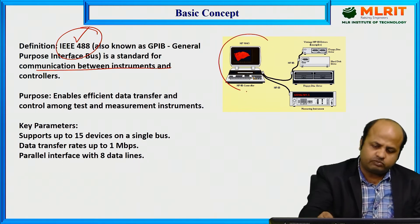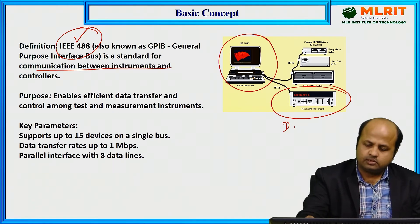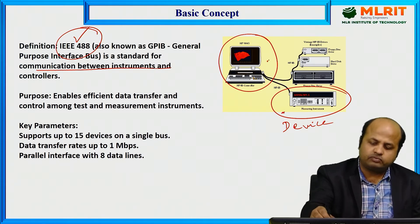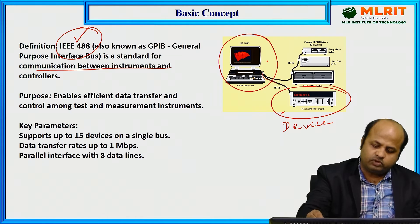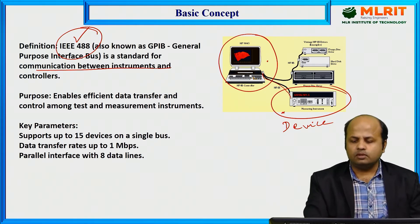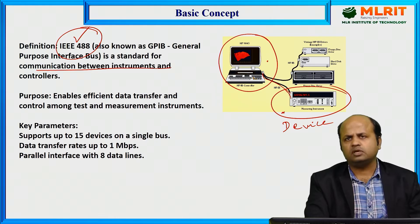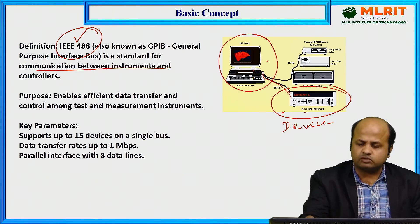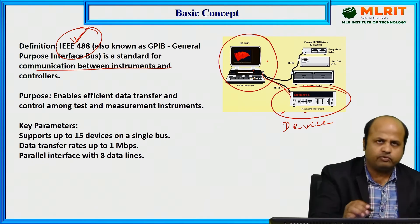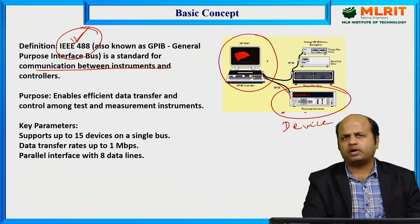Here in the picture, we can see that one computer is there and this is the device. This device is trying to connect with the computer or controller — controller here means computer. By using one USB cable, we can connect the device. USB is also an international set of rules, known as Universal Serial Bus, which we will discuss later. But whenever you want to transfer data from computer to device or device to computer, we have to follow IEEE 488 bus. If you do not follow IEEE 488 bus, we cannot send or receive data between the device and the computer or controller.